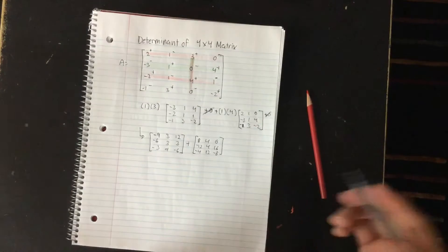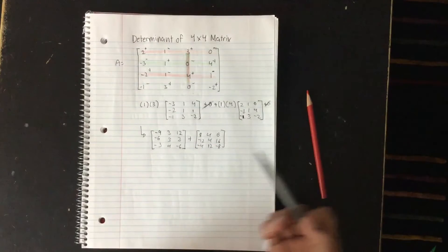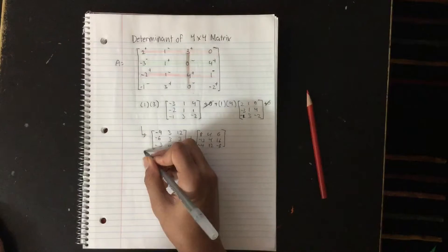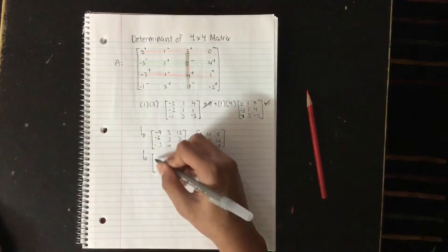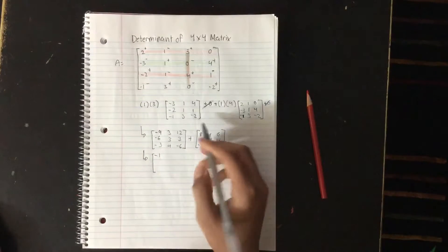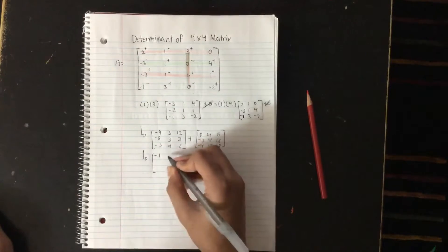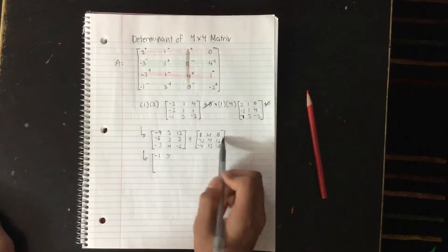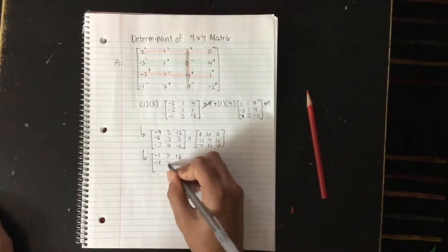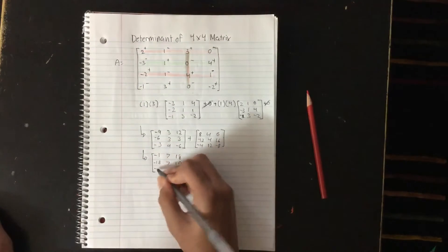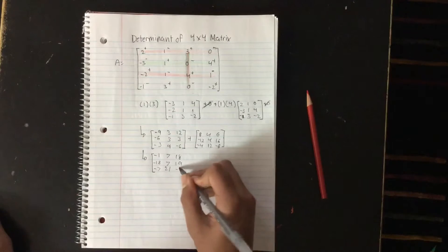So here are our two matrices. Now as I said in my addition video, all we need to do is add the two values that correspond with each other on the matrices. Then we're going to find the determinant of this 3x3 after we're done. So I get: negative 1, positive 7, 18, negative 18, 7, 19, negative 7, 21, and negative 14. That's our resulting matrix.